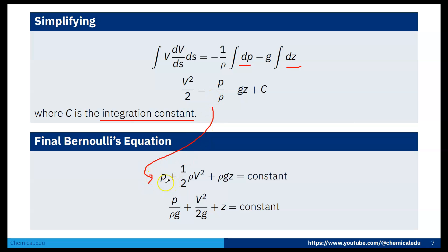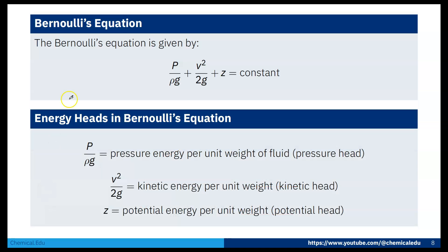Rearranging, we can write: P + ½ρV² + ρgz = constant. Equivalently: P/ρg + V²/2g + z = constant. These are different forms of Bernoulli's equation.